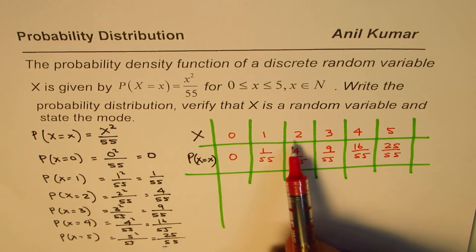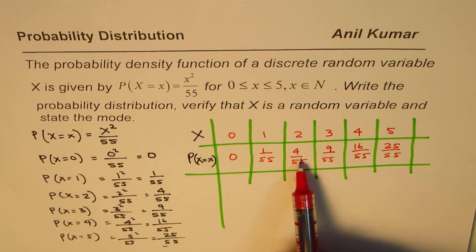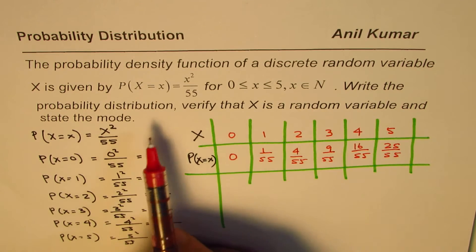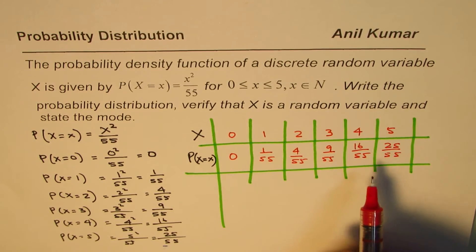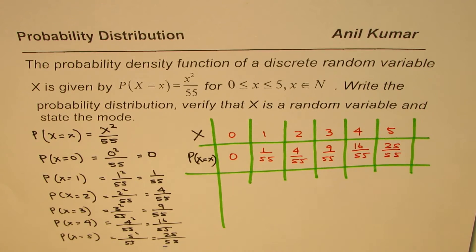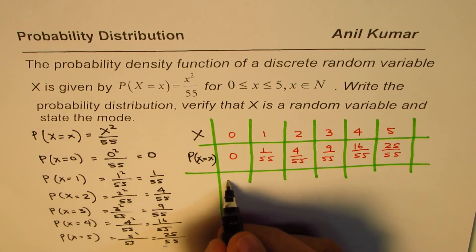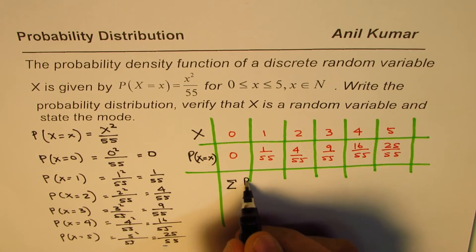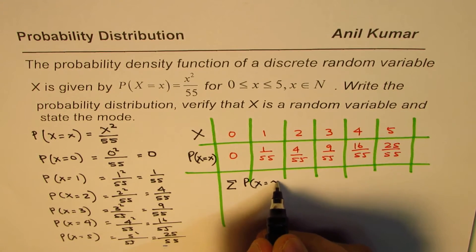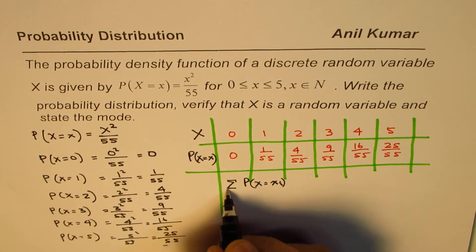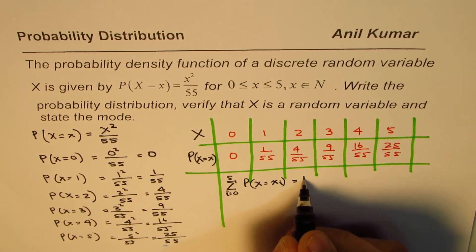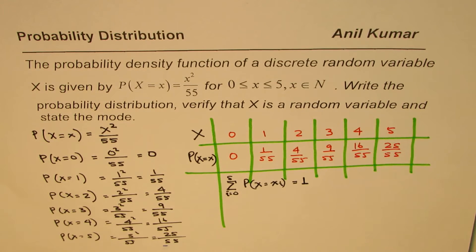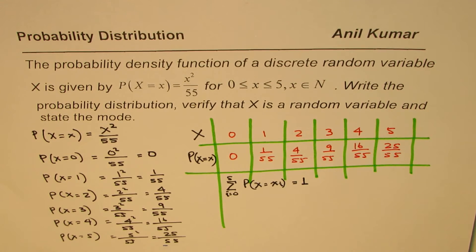These probabilities are 0, 1/55, 4/55, 9/55, 16/55, and 25/55. For each output, what is the probability. Now the second part of this question is, verify that x is a random variable. How do we do that? We can do that if the sum of these probabilities, that is sigma P(x=xi) for i from 0 to 5, should equal 1. In that case, it is a random variable.